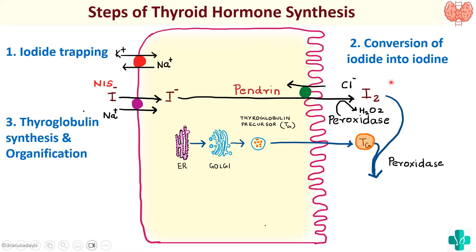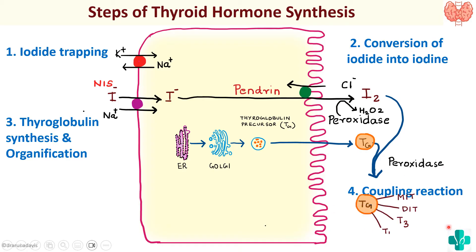With the help of the enzyme peroxidase, we have the coupling reaction. The coupling reaction is the combination of thyroglobulin with iodide, which forms different forms like MIT (monoiodotyrosine), DIT (diiodotyrosine), as well as T3 and T4, which are the basic thyroid hormones. So this is the coupling reaction. Basically the thyroid hormones are bound to the thyroglobulin molecule, and when the body needs thyroid hormone, these T3 and T4 must be released.